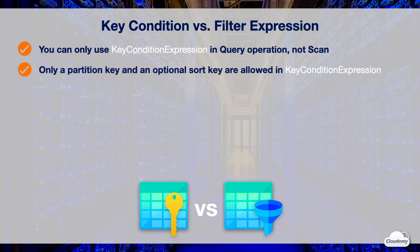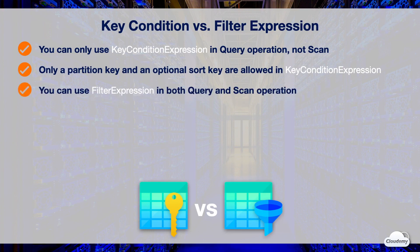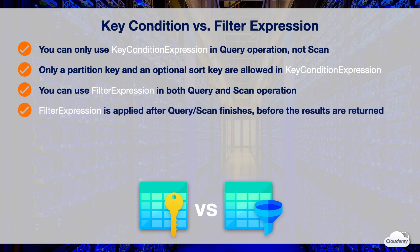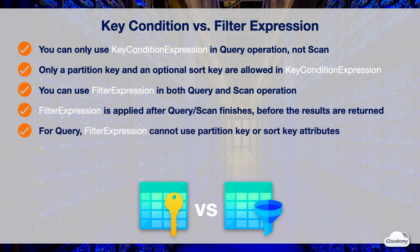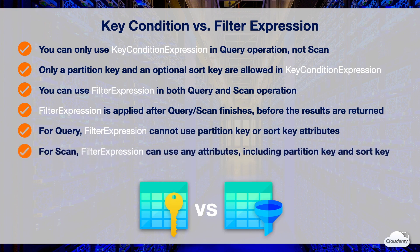You can only use key condition expression in the query operation, not in the scan operation. Only a partition key and an optional sort key are allowed in the key condition expression parameter. Filter expression is similar to key condition expression; however, you can use filter expression for both query and scan operations. A filter expression is applied after a query or scan is finished but before the results are returned, so it consumes the same amount of RCUs as without the filter expression.